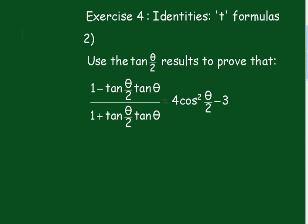Number 2. Use the tan(θ/2) results to prove that (1 minus tan(θ/2)·tan θ) over (1 plus tan(θ/2)·tan θ) equals 4cos²(θ/2) minus 3. It's quite a challenging one. Let's pause the video and have a go at this one.